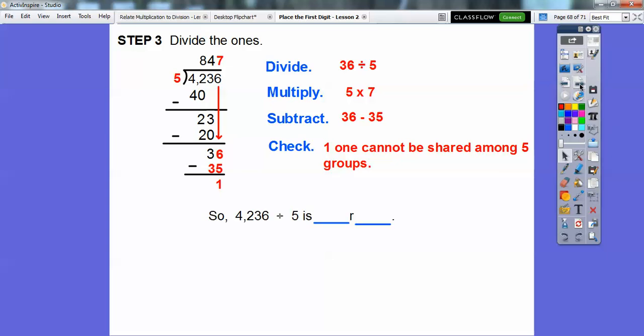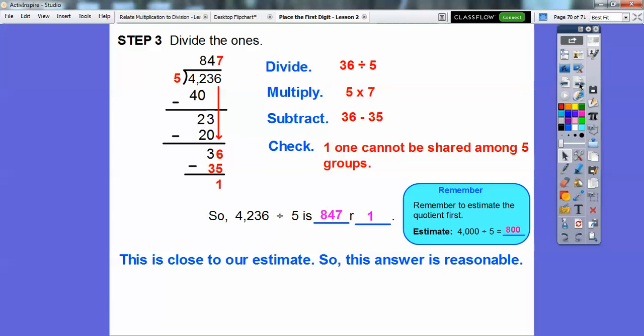So 4,236 divided by 5 is, you always start at the top and go clockwise. So 847 and go down here with the remainder of 1. So 847 with the remainder of 1. Later on we'll change it to a mixed number, 847 and 1-5th. But not right now. And so this is close to our estimate. Our estimate was 800, and we knew that our answer would be a little bit larger than 800, so our answer seems to be reasonable.